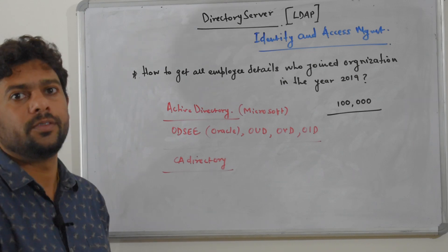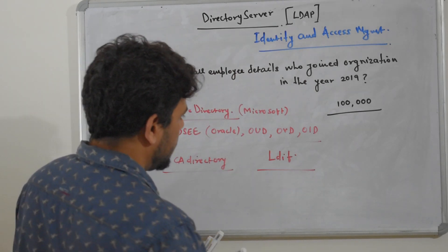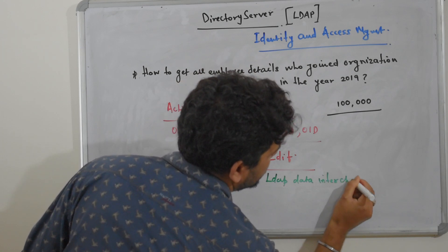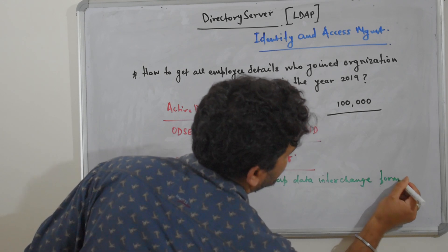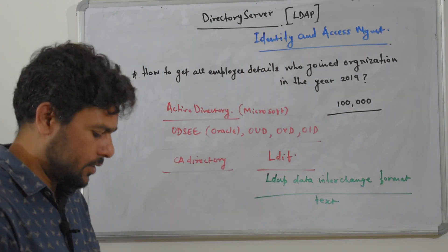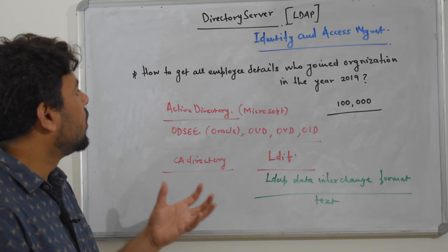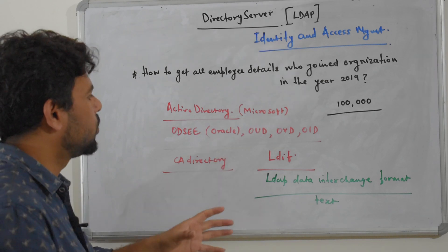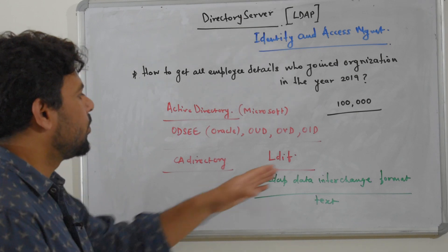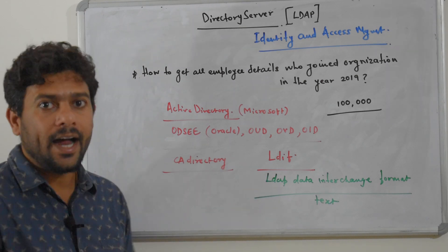So what is LDIF? LDIF stands for LDAP Data Interchange Format. It is a text file in a readable format. Whatever data is in your directory server — say your organization uses Active Directory and employee data is stored there — you export that data in LDIF format. Every vendor has the ability to give you this export. You then process that LDIF file, and that is what we will be discussing in this session.